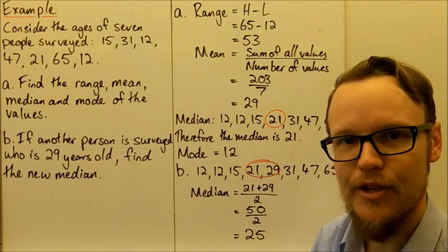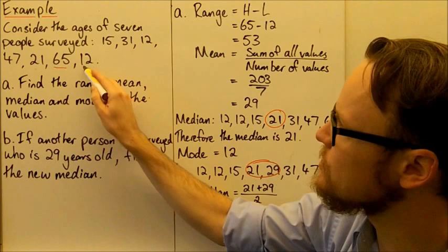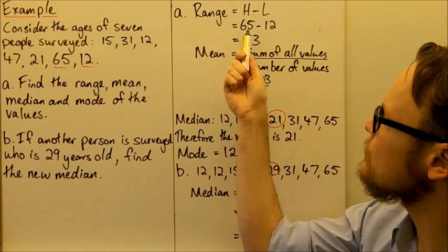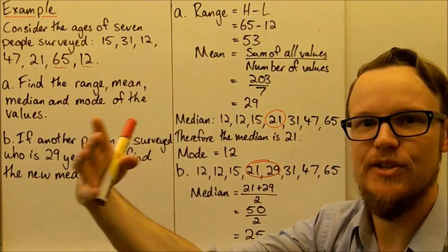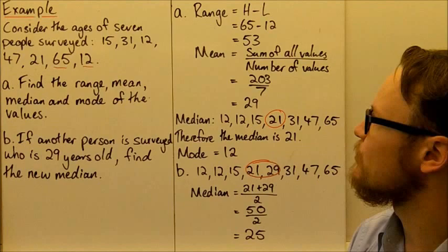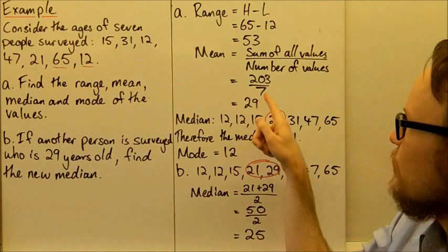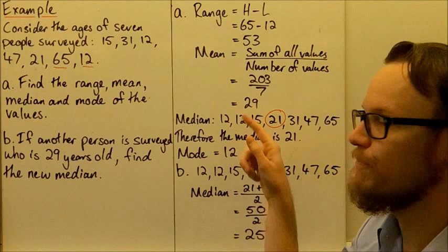We also need to see what happens if another person surveyed is 29 years old — find the new median. For the original data set, the range is the highest value minus the lowest value. The highest is 65, the lowest is 12, so 65 minus 12 gives a range of 53 — meaning a 53-year difference between the youngest and oldest ages. For the mean, we sum all values and divide by 7: 15 plus 31 plus 12 plus 47 plus 21 plus 65 plus 12 equals 203. Then 203 divided by 7 is 29. So the mean is 29.